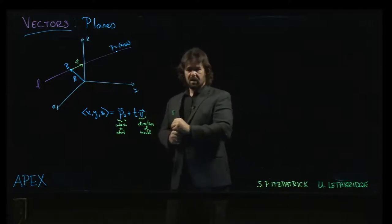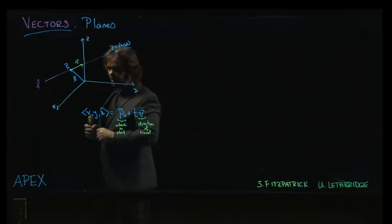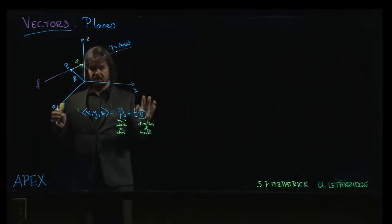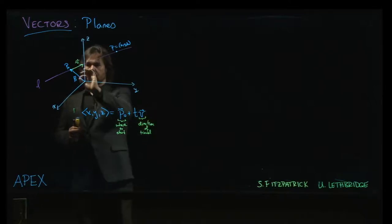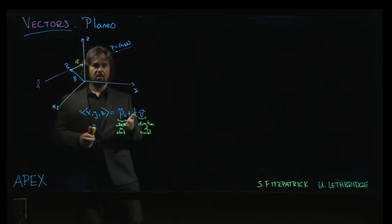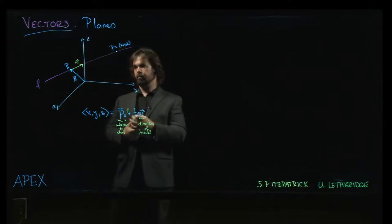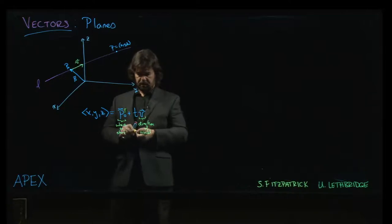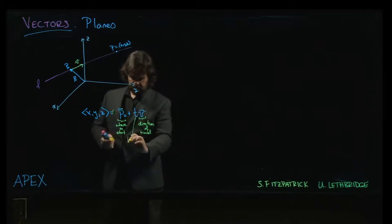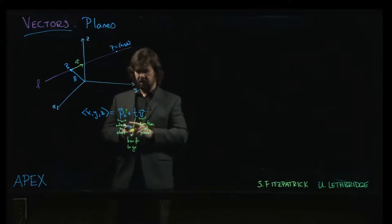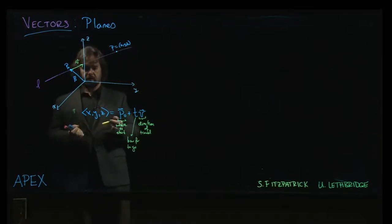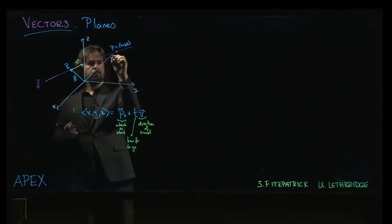Some people will ask that v is a unit vector, because if v is a unit vector, then this number t tells you exactly how far you should go. If t is equal to 5, you've gone 5 units. Otherwise, you've gone 5 times the magnitude of v units. And so, some people will ask for a unit vector, but we usually don't make that requirement.